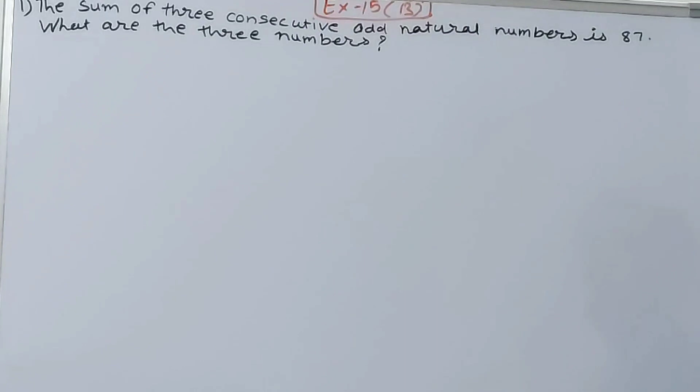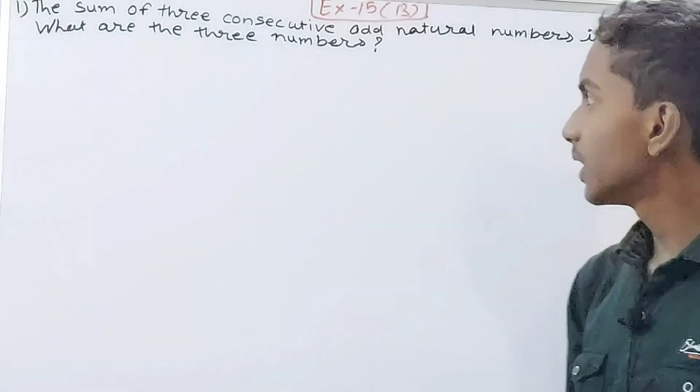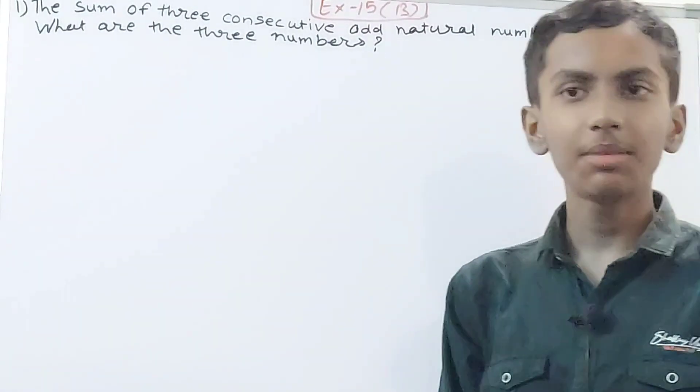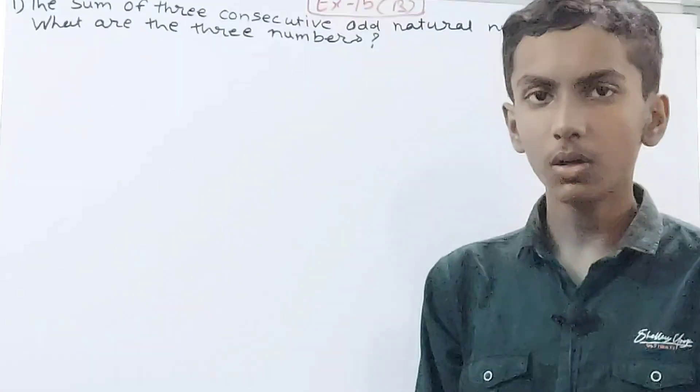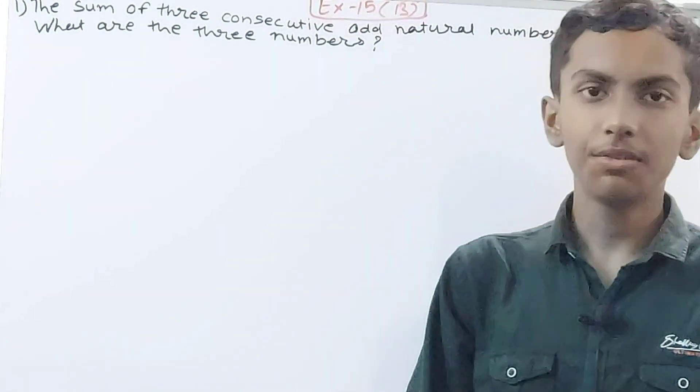The sum of three consecutive odd natural numbers is 87. What are the three numbers? What you are seeing here is that three consecutive odd numbers means the numbers have to be odd but also consecutive, meaning one after another.